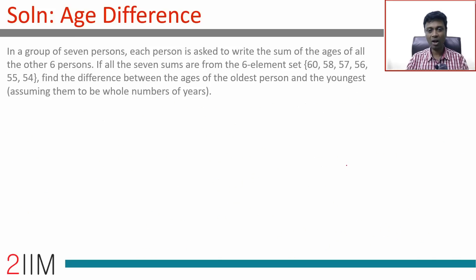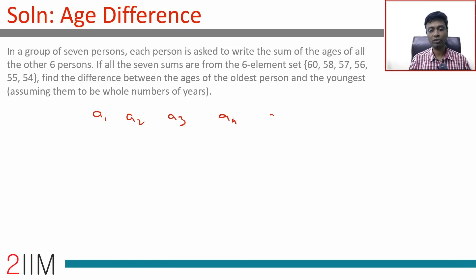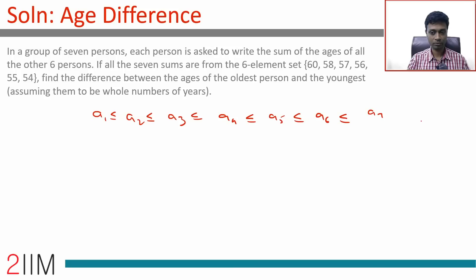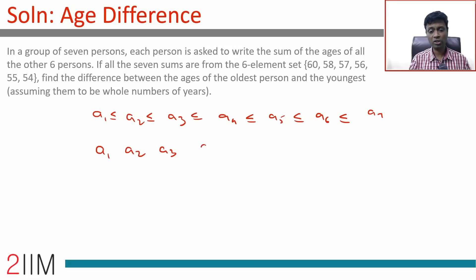Now here's a much simpler approach. We have ages a1 ≤ a2 ≤ a3 ≤ a4 ≤ a5 ≤ a6 ≤ a7 (less than or equal to, since two ages are the same). Working with extreme numbers is very useful: the sum of the six smallest numbers should be the smallest sum, which is 54.